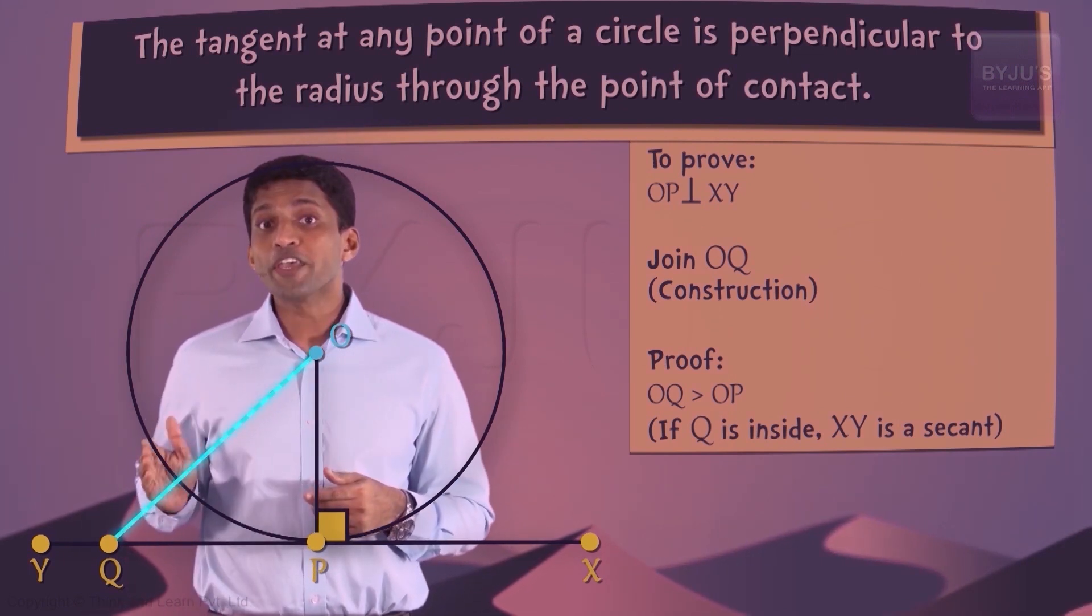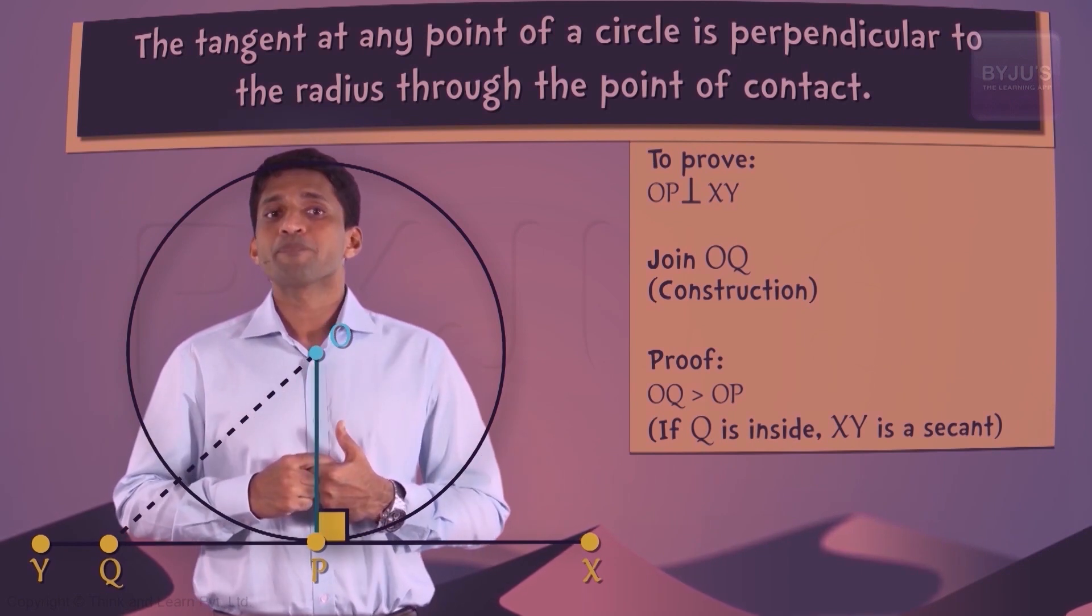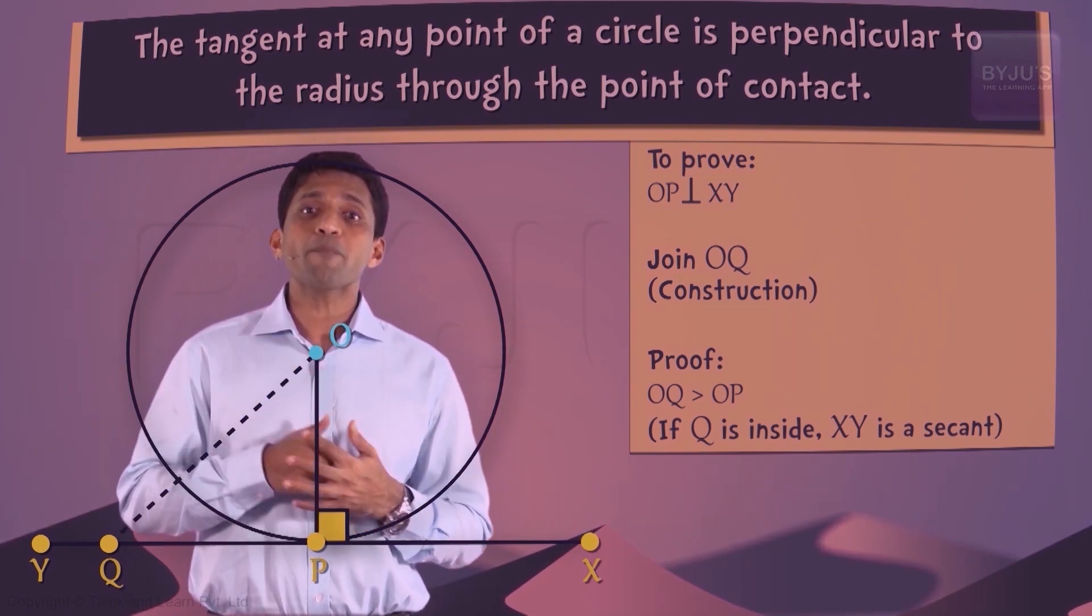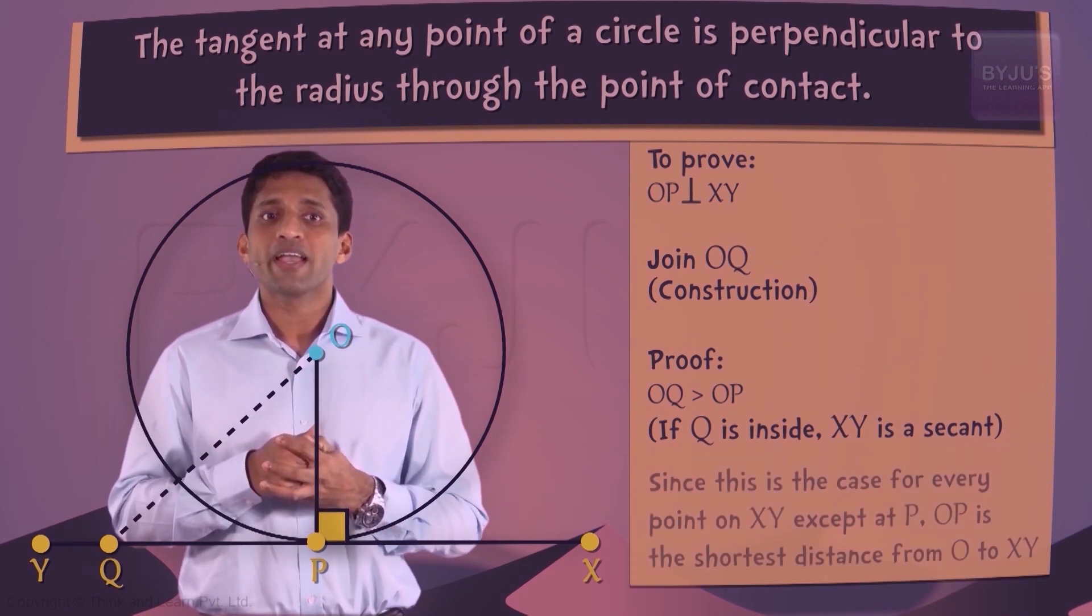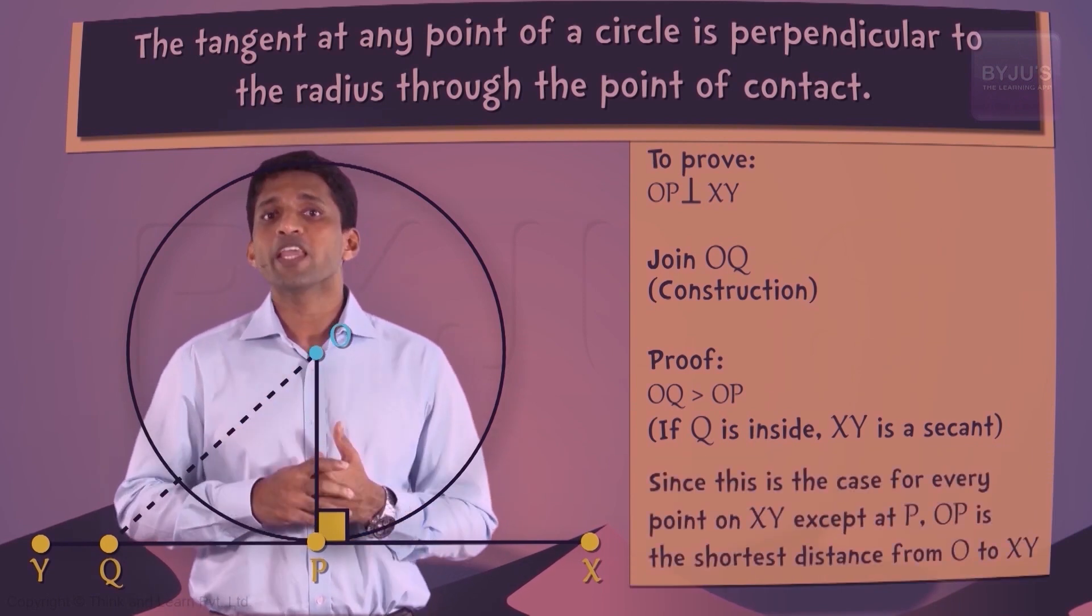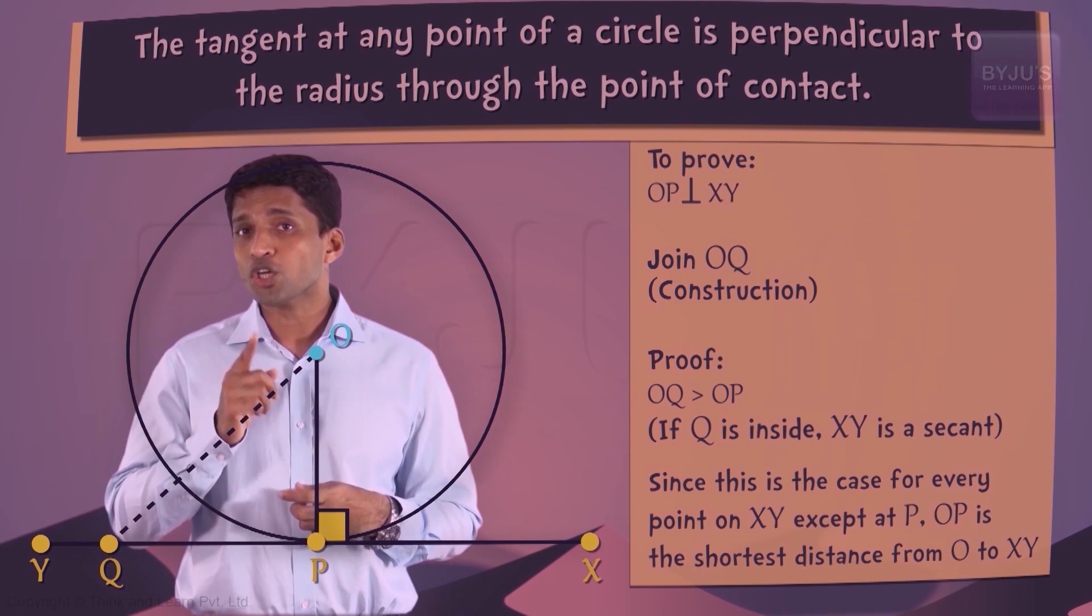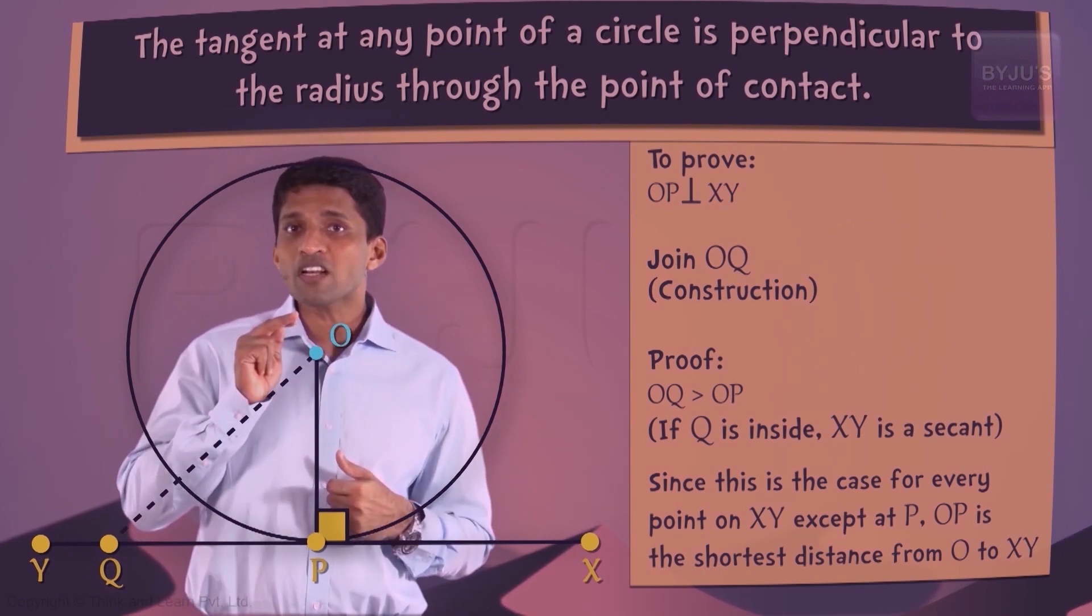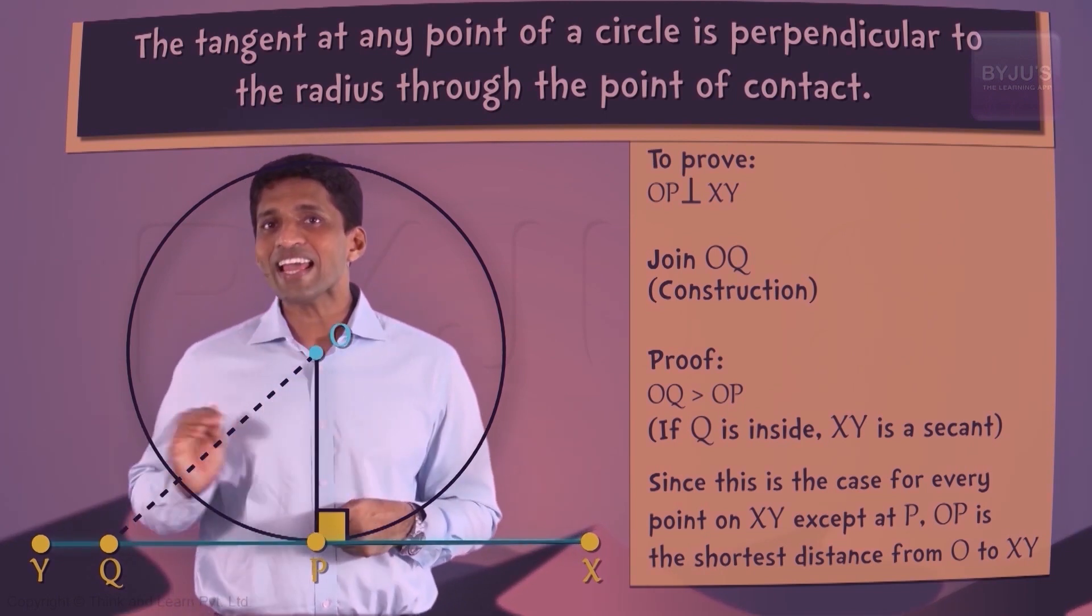Therefore OQ is greater than OP. Since this happens for every point on the line XY other than at the point P, OP will become the shortest distance between the center O and the line XY.